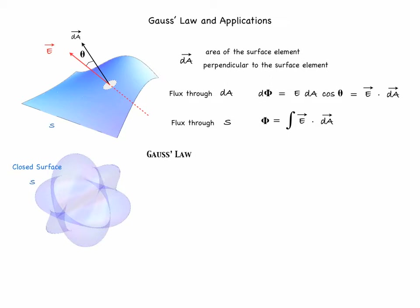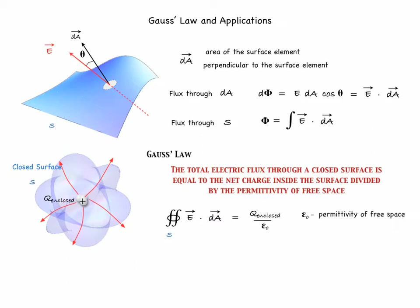Now we can state Gauss's law, which refers only to closed surfaces. Let's pick one such surface S that encloses a certain amount of charge Q. Gauss's law states that the total electric flux through a closed surface is equal to the net charge inside the surface divided by the permittivity of free space ε₀. Mathematically, the surface integral of E dot dA equals Q enclosed over ε₀.